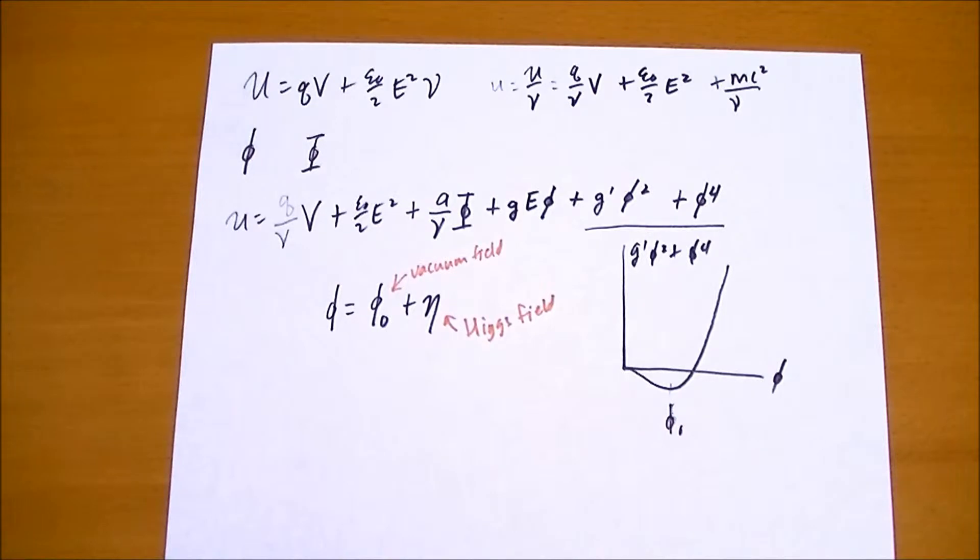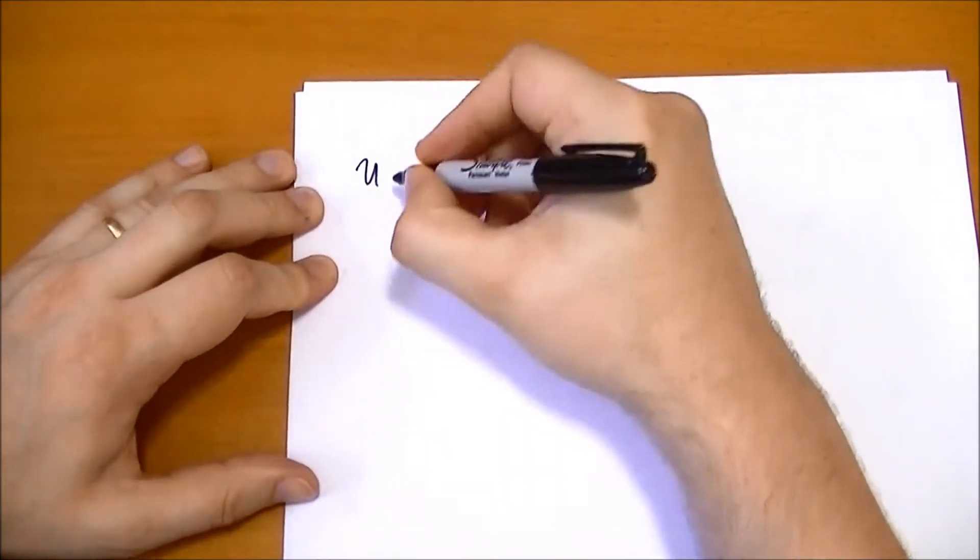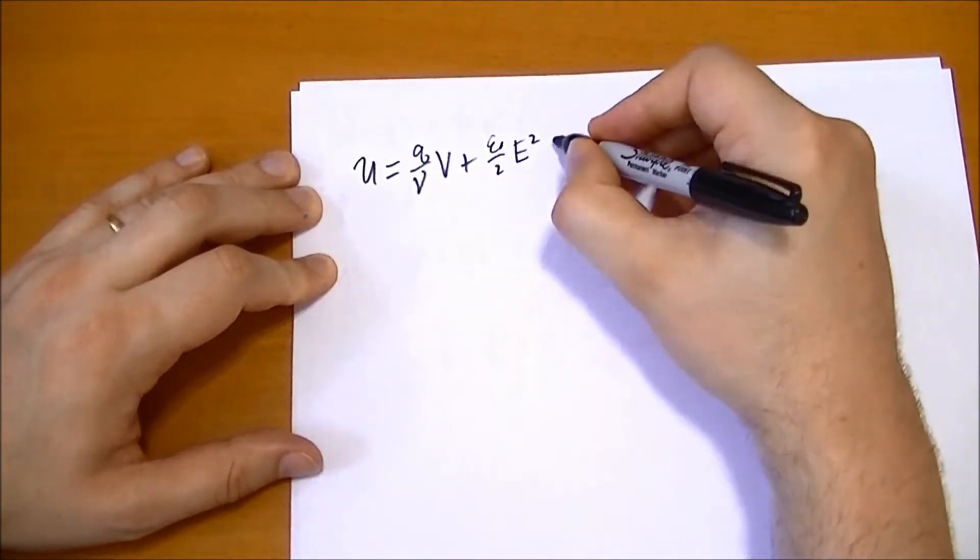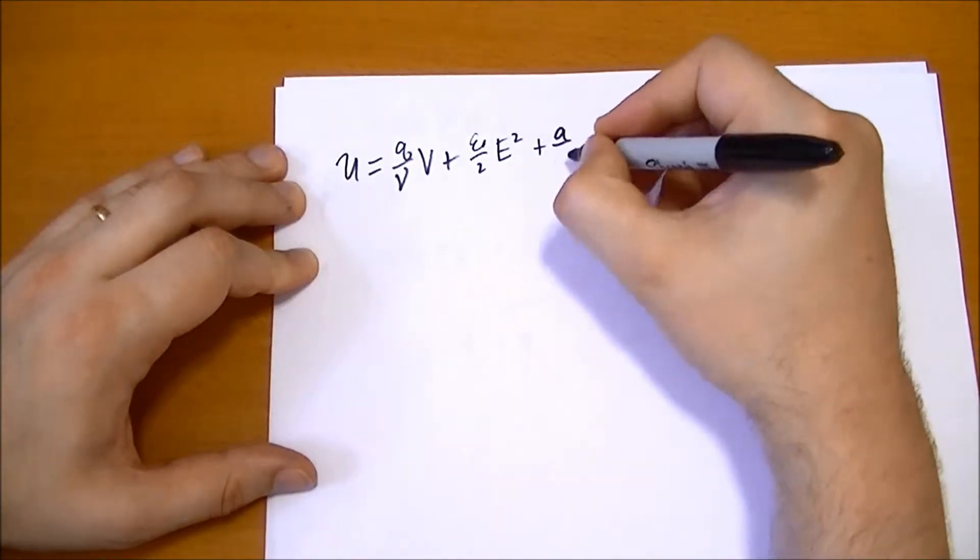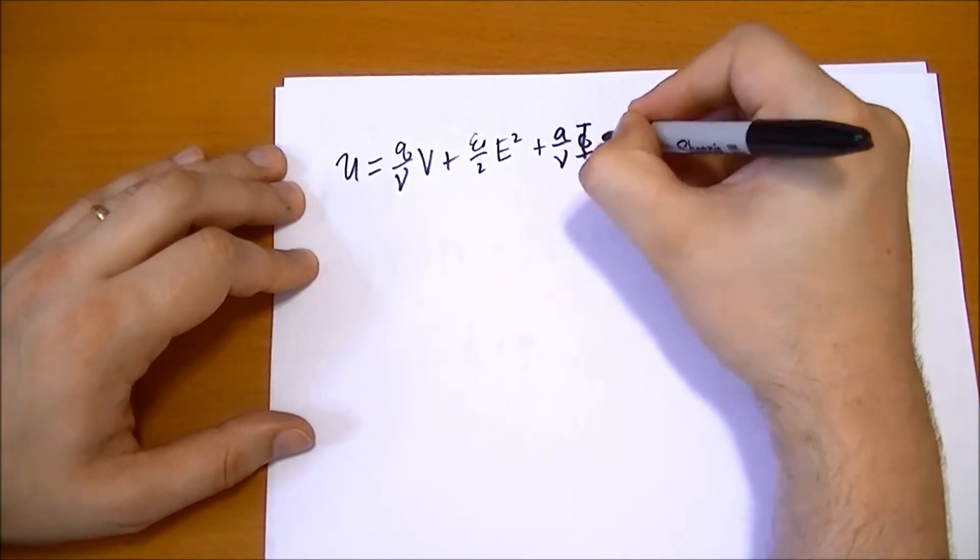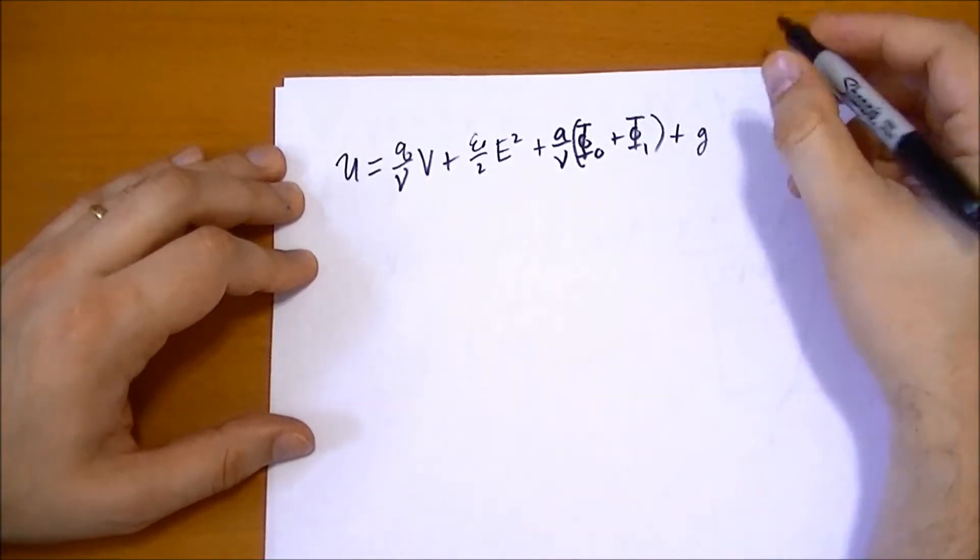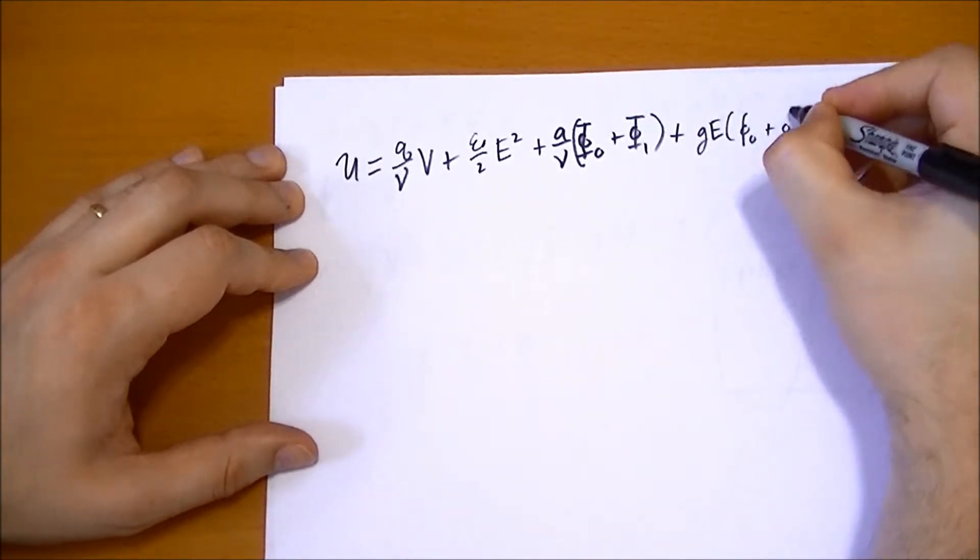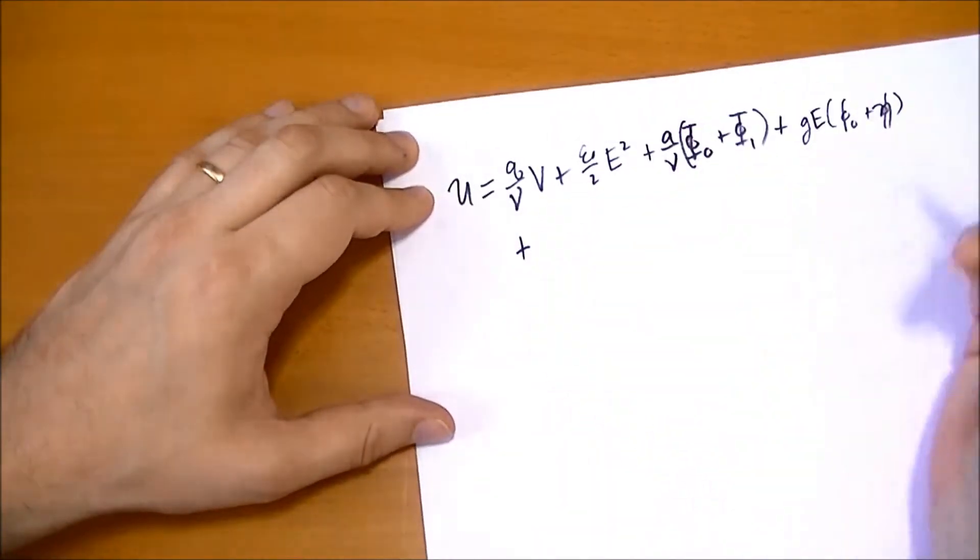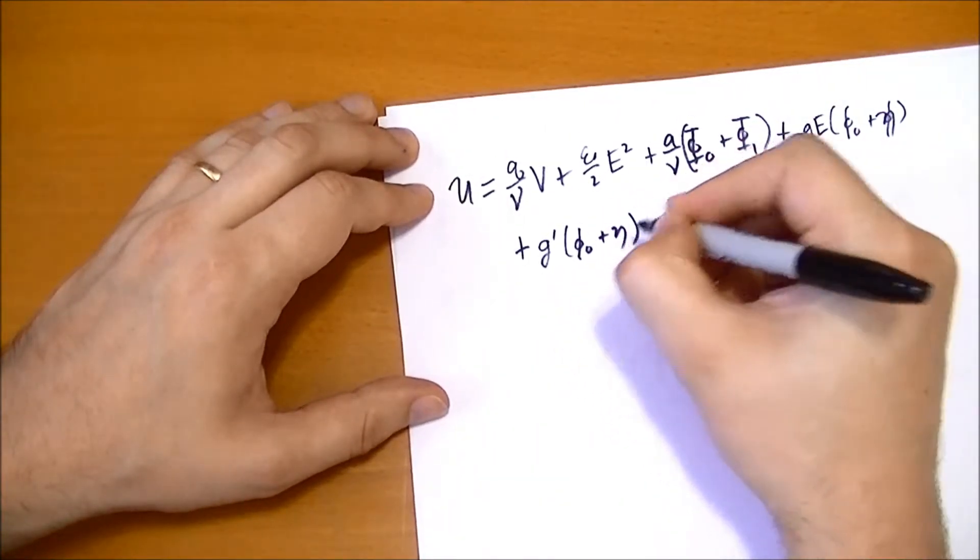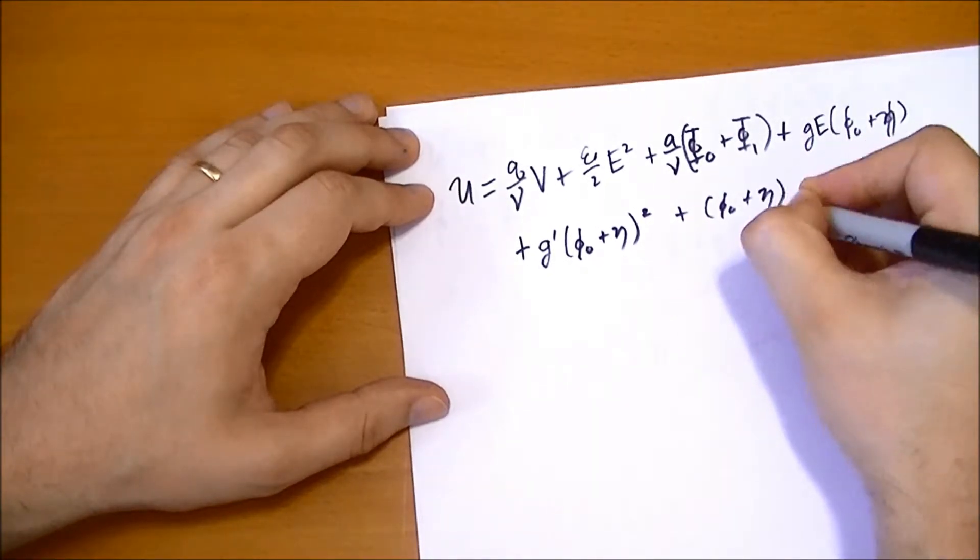That's what this field does in presence of different particles. So rewriting everything into one big equation, we get energy density equals charge density times the potential plus epsilon naught over two times the electric field squared plus this new kind of charge density times the potential, which we have to rewrite as the potential in a vacuum plus the potential due to eta. Then we add in the term for the interaction between the field and the electric field. So E times phi naught plus eta. And now we add in the squares and the fourth power. So we have phi naught plus eta squared plus phi naught plus eta to the fourth power.